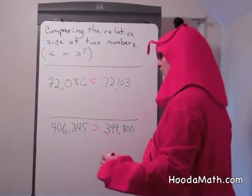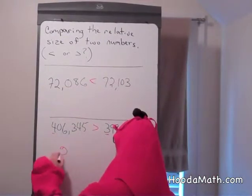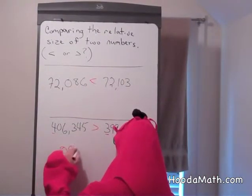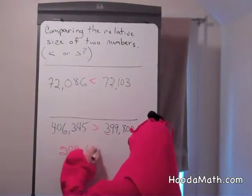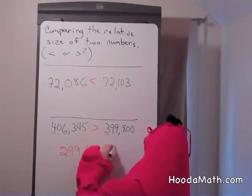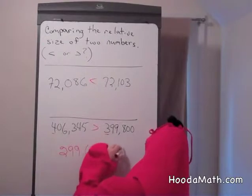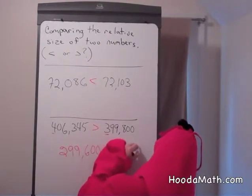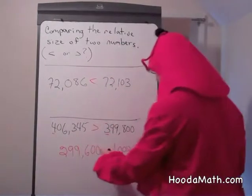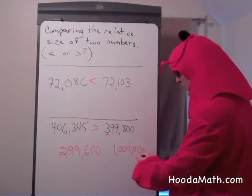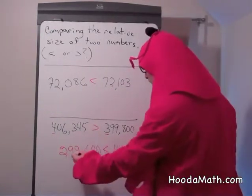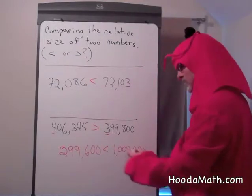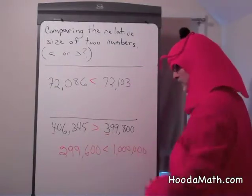Once again, let me review for you. If you had a smaller amount of digits, this has six digits. This number has seven digits. It's always smaller. $299,600 is less than one million.